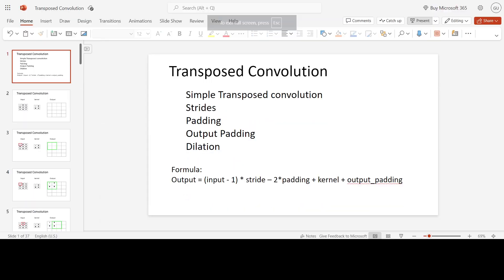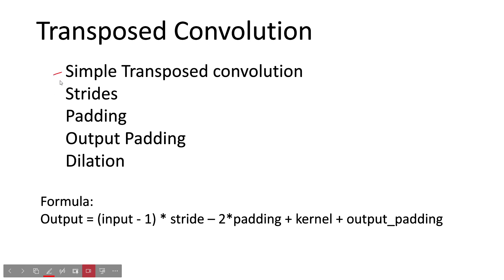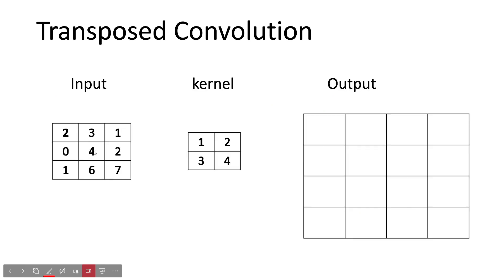Hello everyone. Today in this video we will be looking into transposed convolution. We will cover the simple transposed convolution operation, what is stride, what is padding, output padding, and dilation. There is one formula I want you to remember — for figuring out, given an input image or feature map, and a transposed convolution with a kernel, stride, padding, and output padding, what is the formula for calculating the output shape.